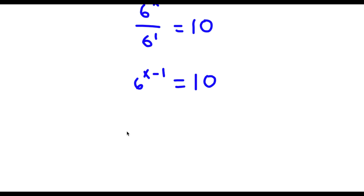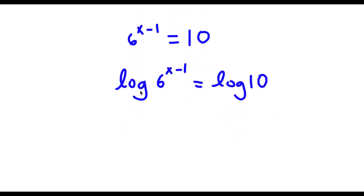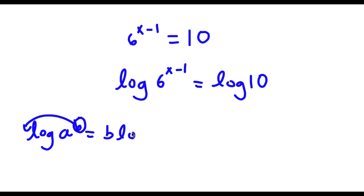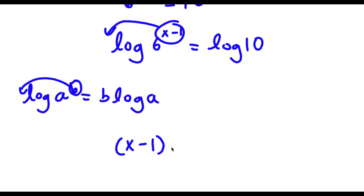Now if I take the log on both sides I have log 6 to the power of x minus 1 is equal to log 10. An important property of logarithms is that if I have something in the form log a to the power of b, I can move this exponent b to the front, so this equals b times log a. So log 6 to the power of x minus 1 becomes x minus 1 times log 6, which is equal to log 10.